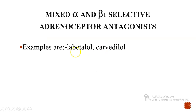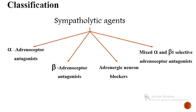The fourth category is mixed alpha and beta-1 selective adrenoceptor antagonists, with examples labetalol and carvedilol. So, the four types of sympatholytic agents are: alpha adrenoceptor antagonists, beta adrenoceptor antagonists, adrenergic neuron blockers, and mixed alpha and beta-1 selective adrenoceptor antagonists.